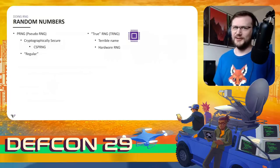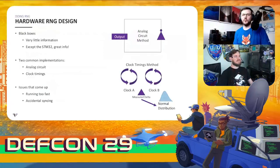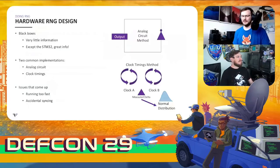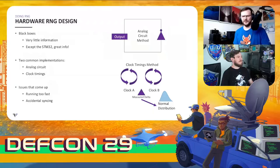The security of hardware RNGs is something we investigated in this research. One unfortunate part about these hardware random number generators is that there's not a lot of information known about how they actually work — they're basically black boxes. One notable exception is the STM32 from ST Microelectronics. They have really great information about the inner workings of their RNG, as well as a proof of correctness and a proof of good quality random numbers.